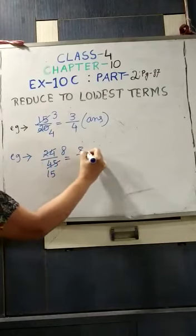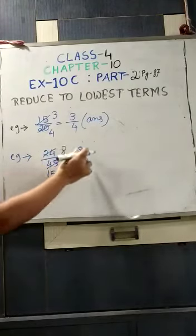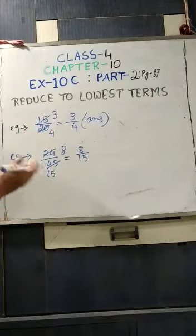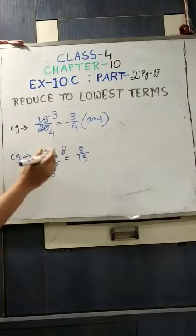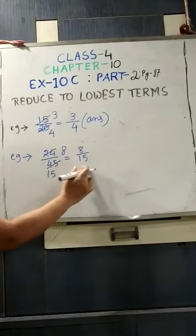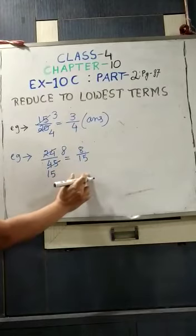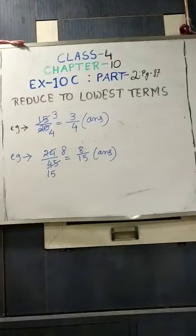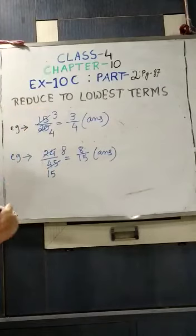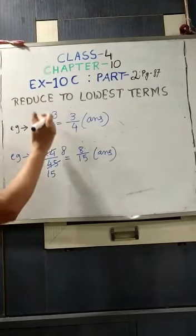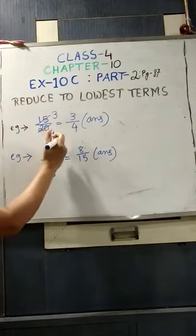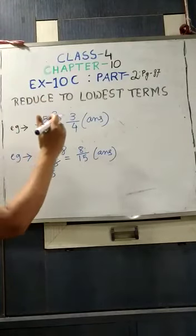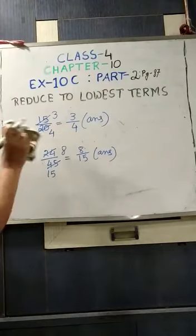So now it is 8 by 15. We cannot reduce 8 by 15 to its lowest term as there is no common factor or common number that divides both 8 and 15. So the answer is 8 by 15. You can use either of the two processes — the first one: finding out the factors and striking out or dividing the common factors; and the second one: directly dividing the numerator as well as the denominator by the same number or the same factor.